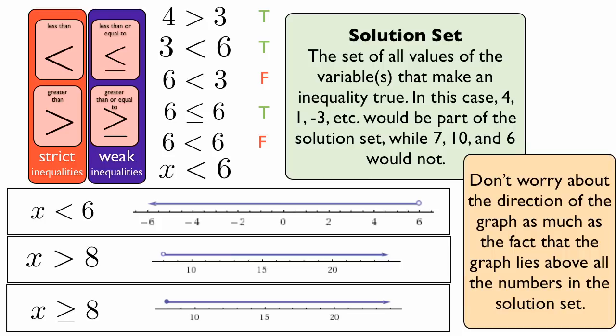My main advice with this is just think about what the inequality means. Think about what the solution set is. What numbers make the inequality true rather than false? When you graph it, the line will go over all those numbers that make the inequality true. Don't have a preconceived notion that the less than goes this way and greater than goes the other way, because if you have the variable in the other place, you might get confused. Think about meaning first.